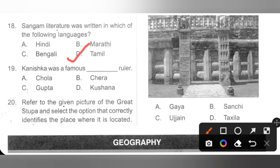Question 19: Kanishka was a famous dash ruler. A. Chola, B. Chera, C. Gupta, D. Kushana. Kanishka was a famous Kushana ruler and an emperor of the Kushan dynasty. Option D is the correct answer.